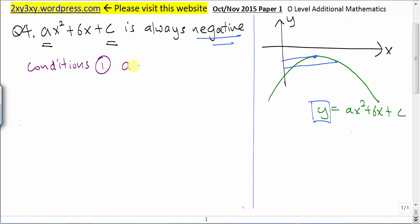So the first condition is a must be less than zero. If a is less than zero, we will have a sad face graph.